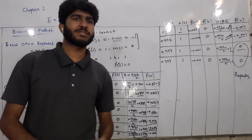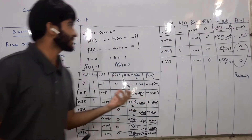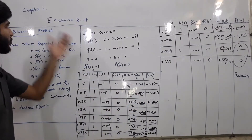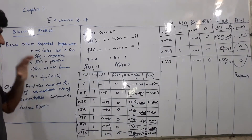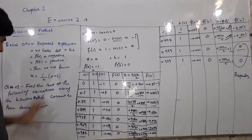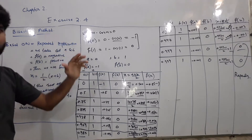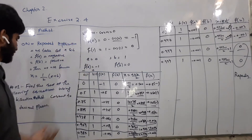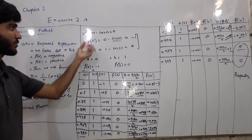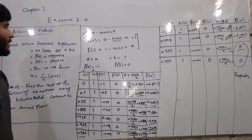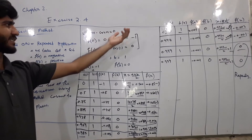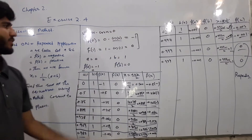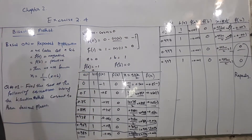Assalamualaikum guys. میں ہوں نظام الدین. پچھلے ویڈیو میں ہم نے exercise 2.4 کا question number 1 کا part 1 solve کیا تھا. آج question number 1 کا part 2 solve کر رہے ہیں. Part 2 ہے: x minus cos x is equal to 0. اس کو بھی bisection method پہ ہی solve کرنا ہے.